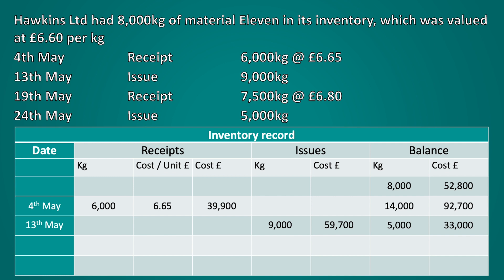Following this, we can record the receipt on the 19th of May. This follows the same principles as the first receipt — we simply add the 7,500 kilograms and the cost of £51,000 to our existing balance. This gives us a new balance of 12,500 kilograms at a value of £84,000.